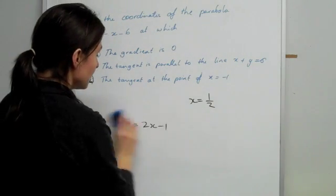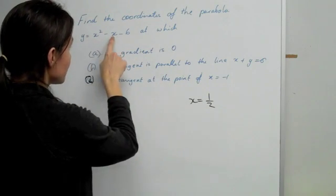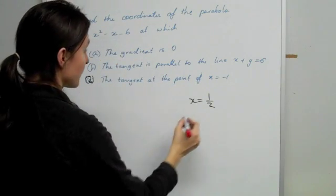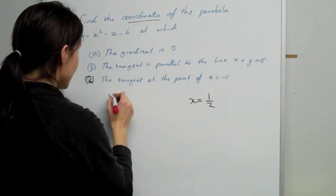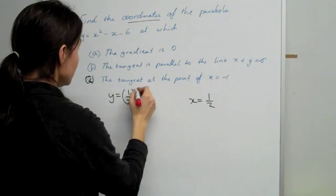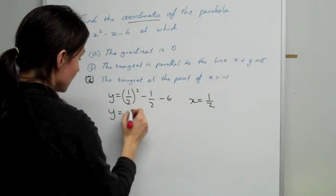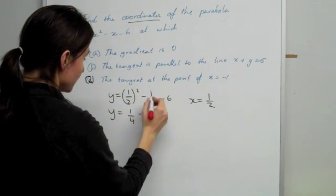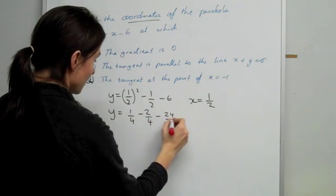Once we've done that, we know that we have to substitute it into this equation because we want to get the coordinates. So what we need to do now is just put the half in. So it's (1/2)² - 1/2 - 6, which gives us -1/4 - 2/4 - 24/4.